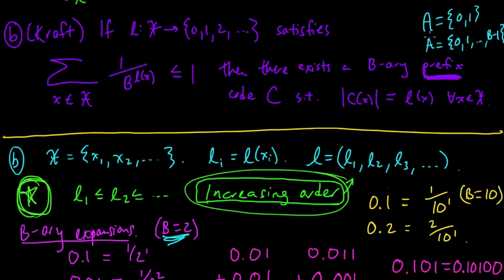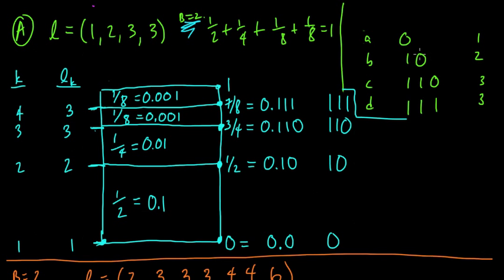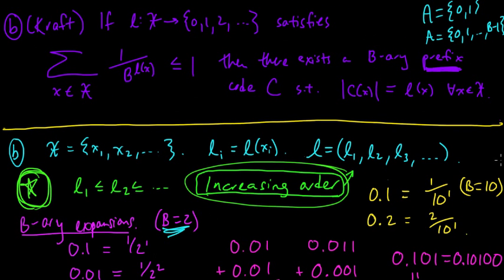But you might have some other code alphabet that you want to use instead of zero to b minus one, in which case once you do this construction and you get your code words, then you obviously just map these symbols to the appropriate symbols in whatever your desired code alphabet is.